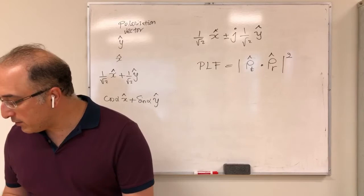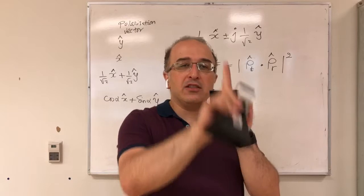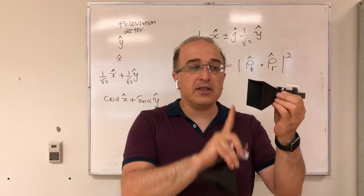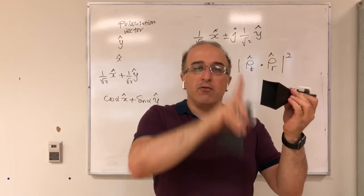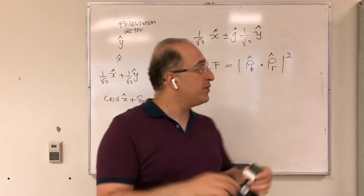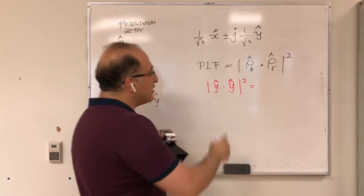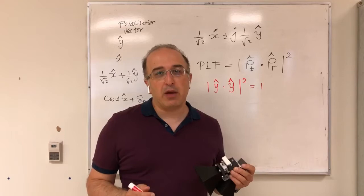Let me give an example. Assume I have two linearly polarized antennas, both radiating in the y-hat direction. The polarization of antenna one is y-hat and the polarization of antenna two is also y-hat. If I calculate the polarization loss factor for this configuration, I get y-hat dotted with y-hat squared. Dotting two identical unit vectors gives 1, so PLF equals 1 — meaning no loss due to polarization mismatch.